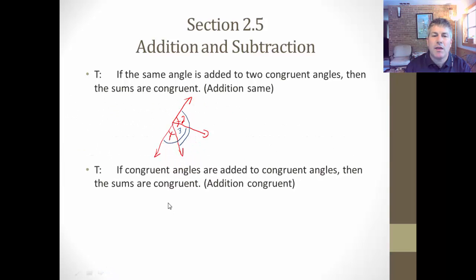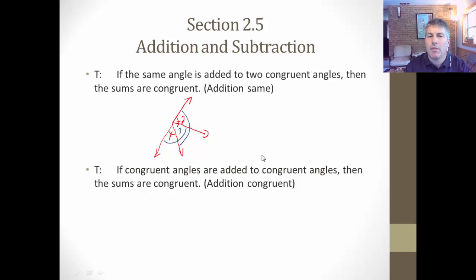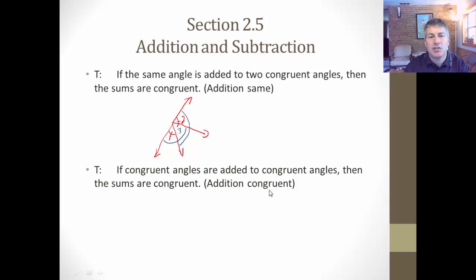We can do the same thing with angles: if congruent angles are added to congruent angles, then their sums are congruent. We'll call that 'addition congruent.' You're going to have to differentiate in your reasons for proof — same versus congruent. Adding the same set of points or the same angles is different than adding congruent angles. And again, addition means going from something small to something big.